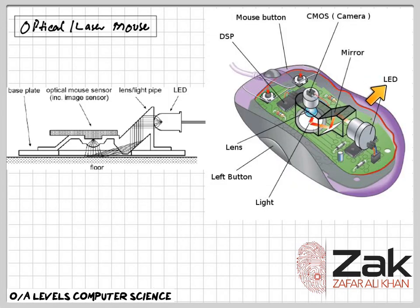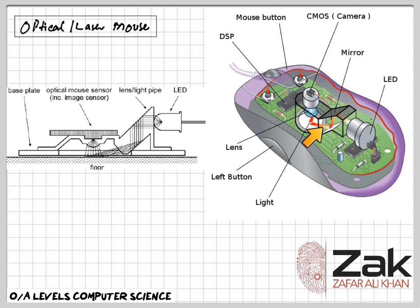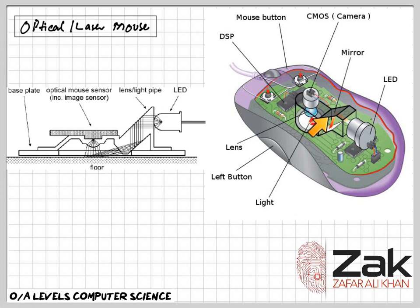To revise: an optical mouse works by using a low-resolution video camera embedded in the sensor to take successive images of the surface on which the mouse operates. It uses an LED — light-emitting diode — which emits red light onto the surface underneath, which is reflected back and fine-tuned before being picked up by the sensor. A plastic lens collects the reflected light and forms a black-and-white image of a tiny section of the surface.